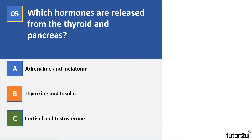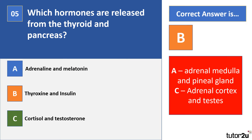Question five. Which hormones are released from the thyroid and pancreas? A: adrenaline and melatonin; B: thyroxine and insulin; C: cortisol and testosterone. The correct answer is B — thyroxine and insulin. For A: adrenaline is produced from the adrenal medulla, which is part of the adrenal gland; melatonin, the sleep hormone, is produced from the pineal gland, also known as the third eye. For C: cortisol is produced from the adrenal cortex, also part of the adrenal gland; testosterone is produced from the testes. Make sure you know your endocrine glands, the hormones they produce, and the functions of those hormones.